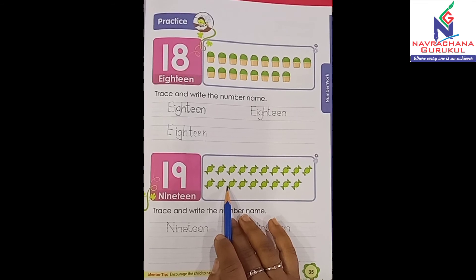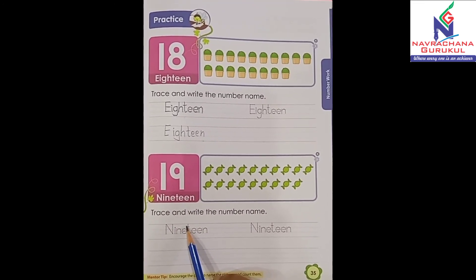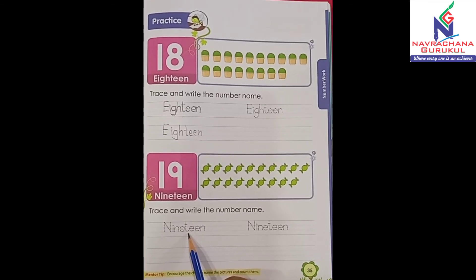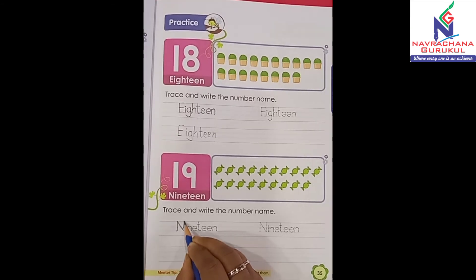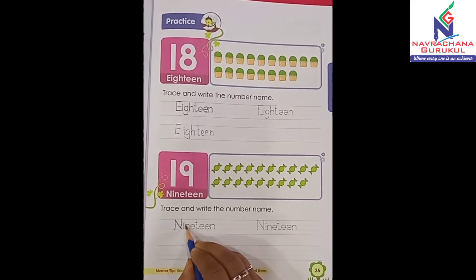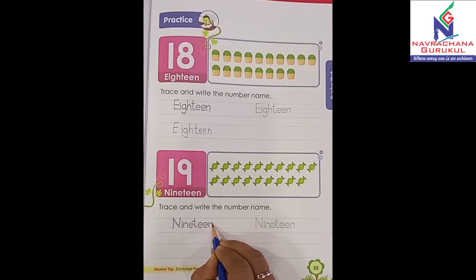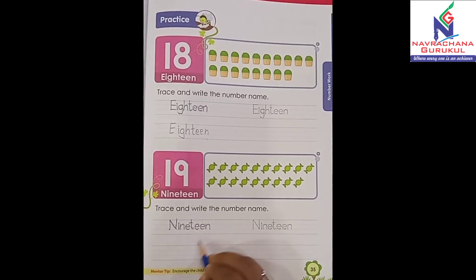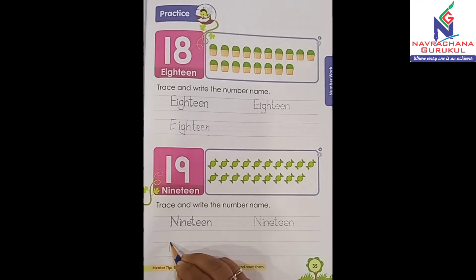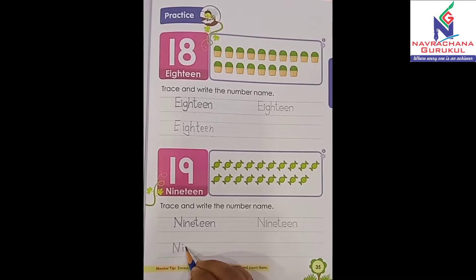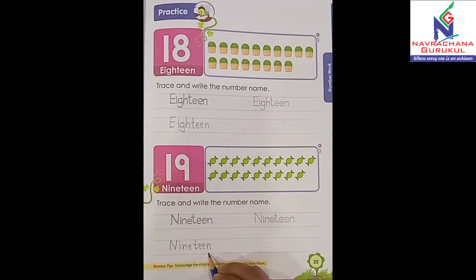19 chocolates. Let's trace and write the number name. You have given the number name of 19. Let's trace and write it: N-I-N-E-T-E-E-N, 19. Okay? Now let's write it over here: N-I-N-E-T-E-E-N, 19.